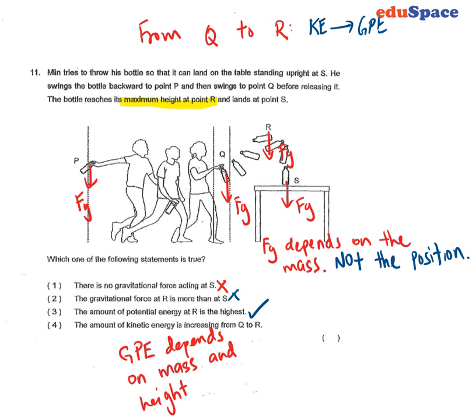And lastly, as you go from Q to R, the kinetic energy actually converts into gravitational potential energy, which causes the kinetic energy to drop. So the answer in this case is 3.